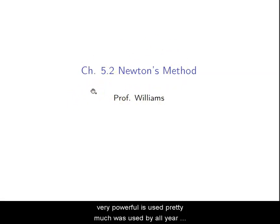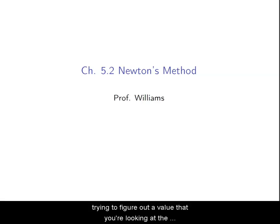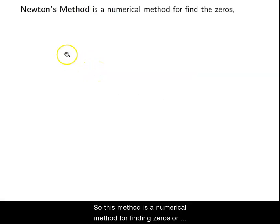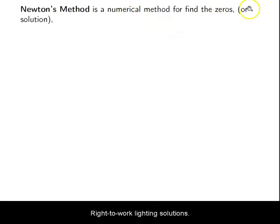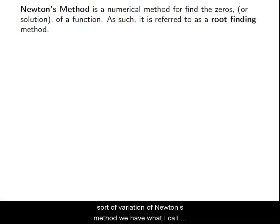This method is very powerful. It's pretty much what's used by all your calculators, Desmos, things like that when they're trying to figure out a value. They're generally using Newton's method to calculate those values. Newton's method is a numerical method for finding zeros, or you can also use it for solving equations, which is what we'll do today. It's referred to as a root-finding method. There are many root-finding methods, and most of them are some sort of variation of Newton's method.